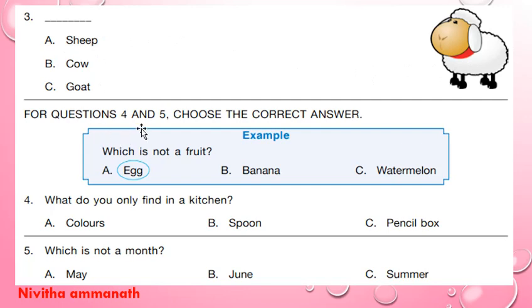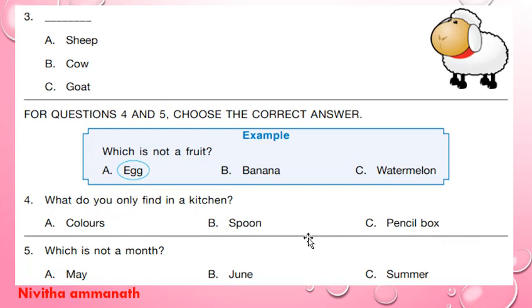For questions 4 and 5, choose the correct answer. For example, which is not a fruit? Here banana and watermelons are fruits. Egg is not a fruit, so A is the correct option. Next question: what do you only find in a kitchen? Colors, spoon, pencil box — we see spoons in the kitchen, so 4B is the correct option.